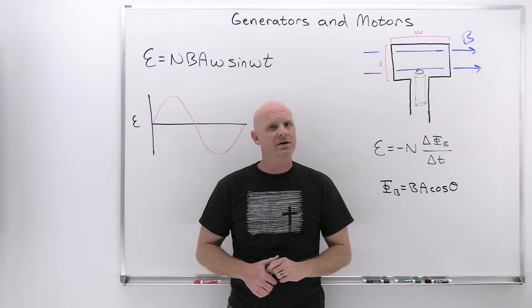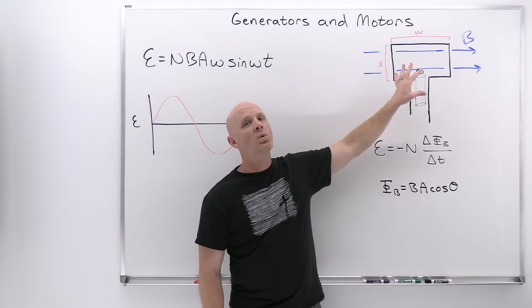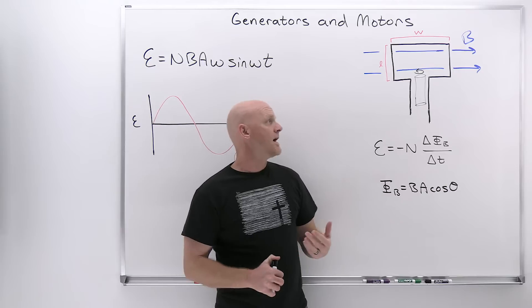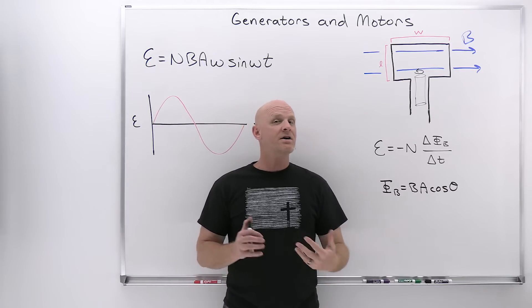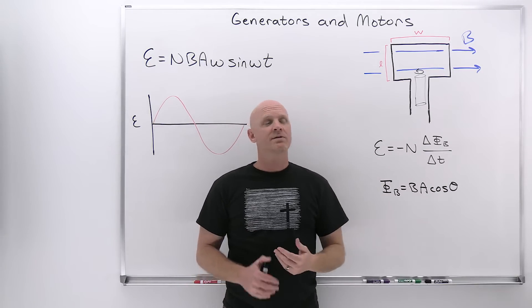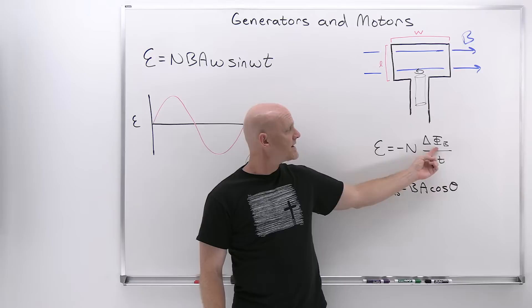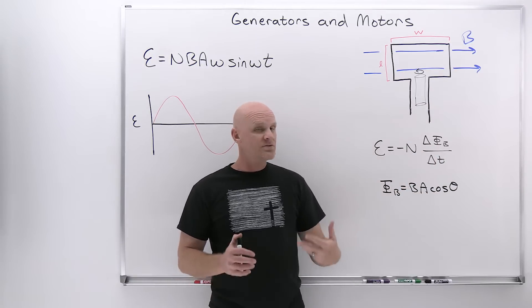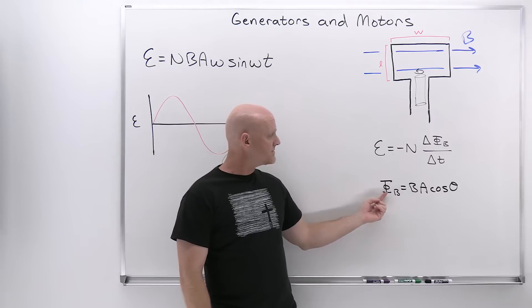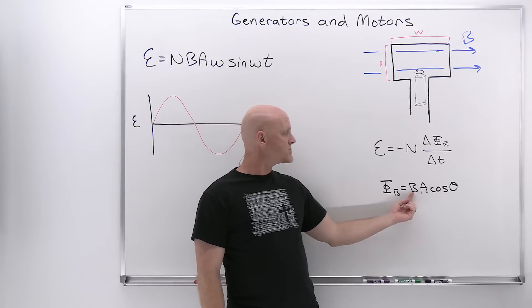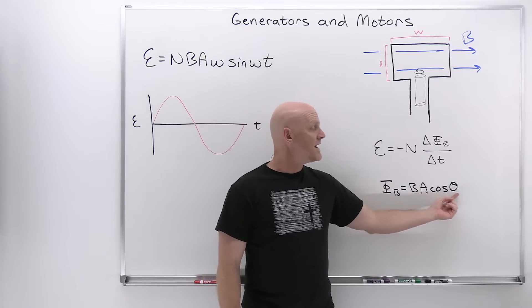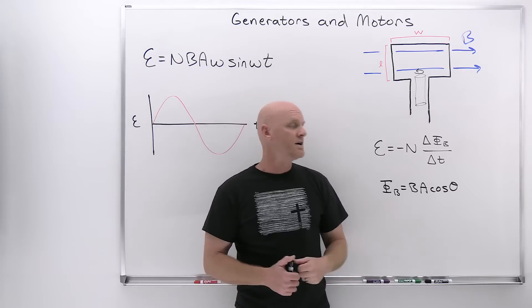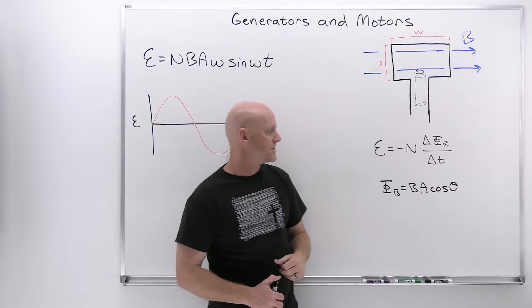A generator is going to involve a coil of wire rotating in a uniform magnetic field. You might recall in the last lesson, Faraday's law showed us that if we have a changing magnetic flux, we'll induce an EMF in a loop of wire. And that's what we're going to be doing here. Magnetic flux is dependent upon the strength of the magnetic field, the area of the loop, and the angle theta — the angle between the magnetic field and the normal to the plane of the loop of wire.